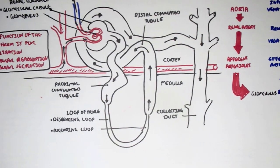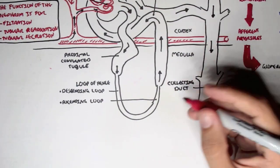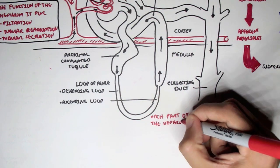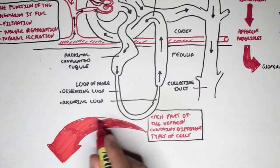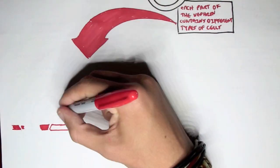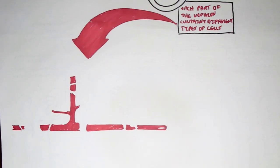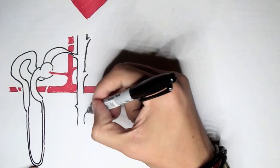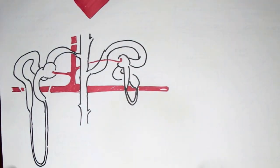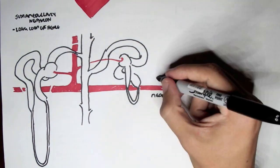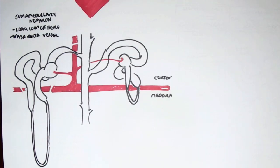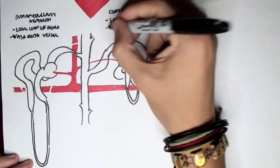The vasa recta is only present in certain types of nephrons, and we'll get back to this soon. Another important thing is that each part of the nephron contains different types of cells. There are two main types of nephrons. This long-looking nephron which dips down into the medulla is known as the juxtamedullary nephron - it has a long loop of Henle and contains the vasa recta vessels. The other short-looking one, which just dips to the medulla but is more prominent in the cortex, is known as a cortical nephron - it has a short loop of Henle and doesn't go deep into the medulla.